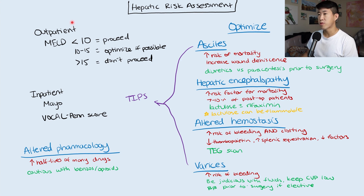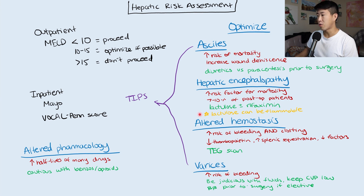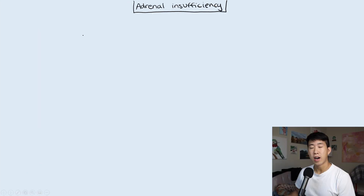Quick recap for hepatic risk assessment: if outpatient, check the MELD score; if inpatient, check the Mayo and VocalPenn scores. Then based on comorbidities, optimize the patient with diuretics, lactulose, or other interventions before surgery.